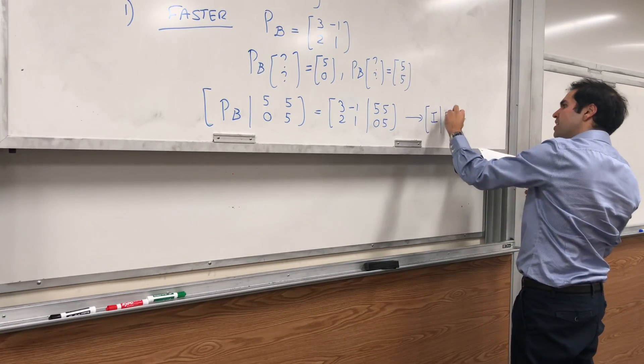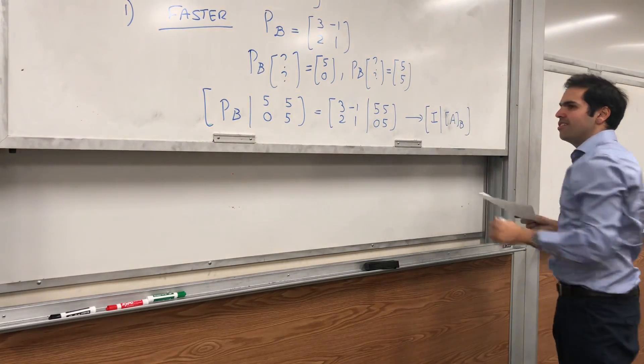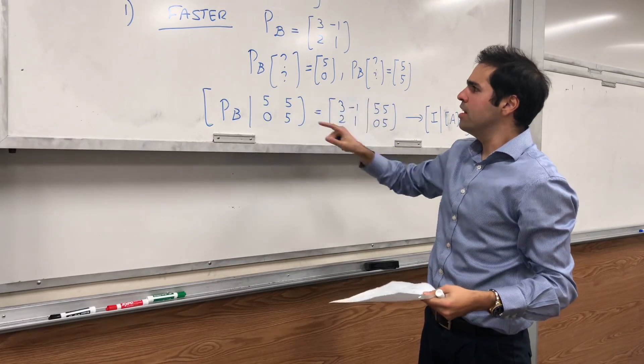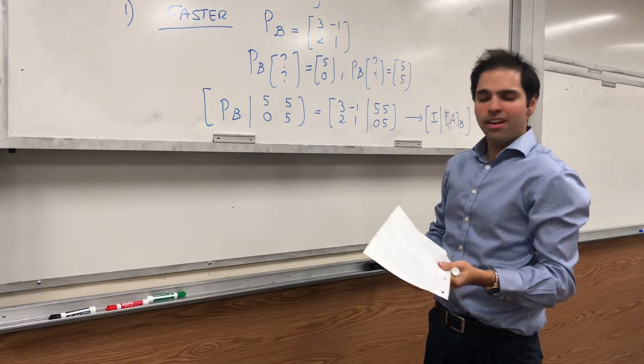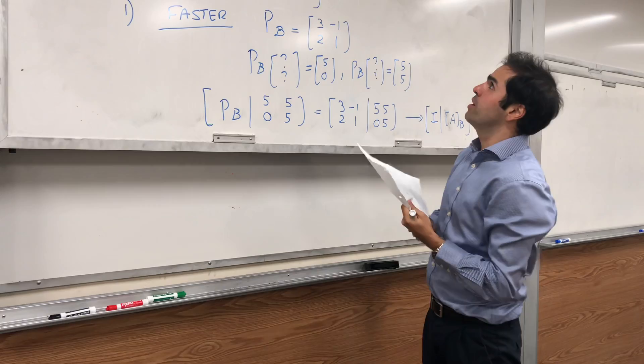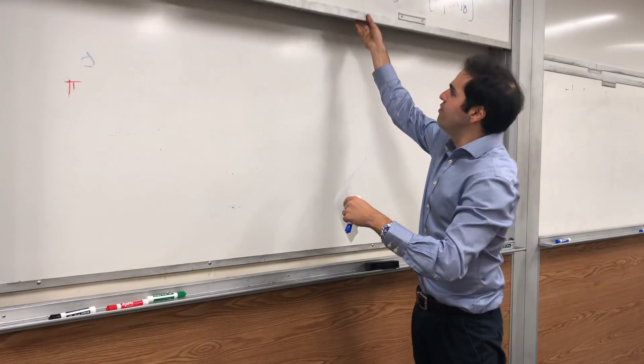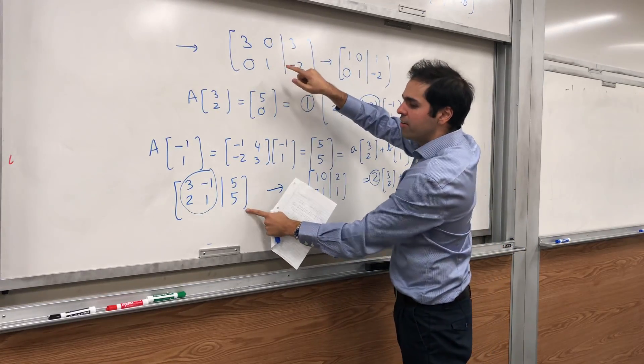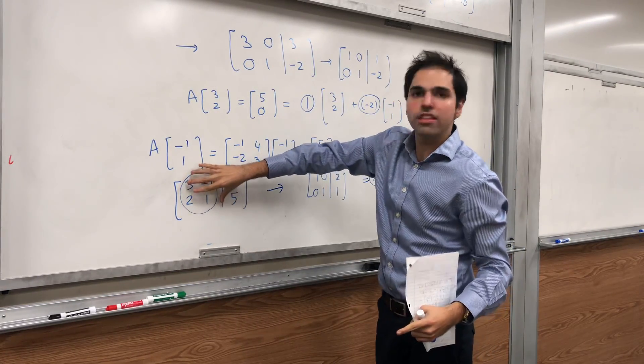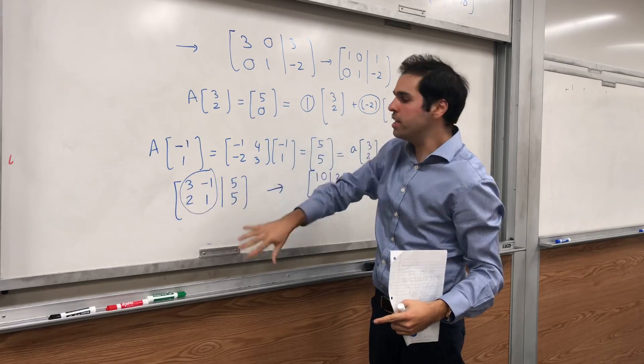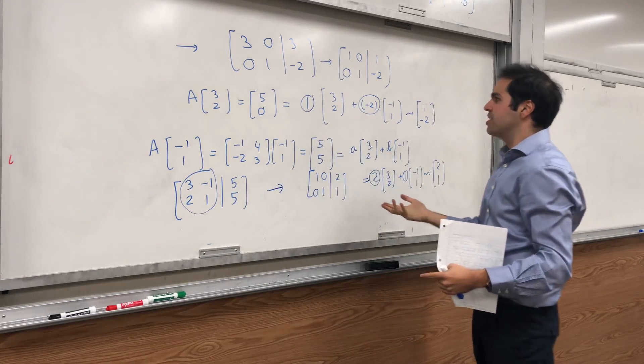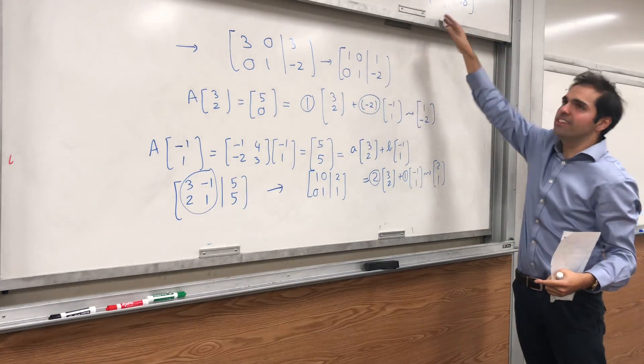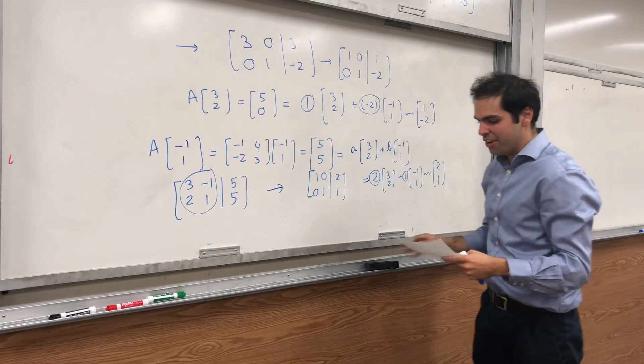[I_n | A_B]. And that just reflects that in both cases, we use the exact same row reductions. Because notice, in fact, in those two things, we started out with the same matrix, which is P_B. It's just the right-hand side that changed a bit, and we tried to make the left-hand side be the identity matrix, which is precisely what we have here.